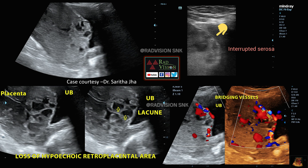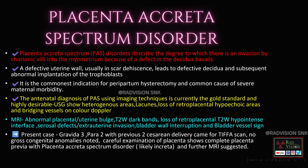Next case, thanks to Sarita Jha for contributing: here you can see the placenta is thickened and heterogeneously thickened, there is an abnormal bulge, there are multiple enlarged placental lacunae, and you can see a defect or interrupted serosa. The placental tissue is seen extending up to the urinary bladder. On color Doppler, you can see multiple bridging vessels and loss of the hypoechoic retroplacental area. This is consistent with placenta accreta spectrum disorder.